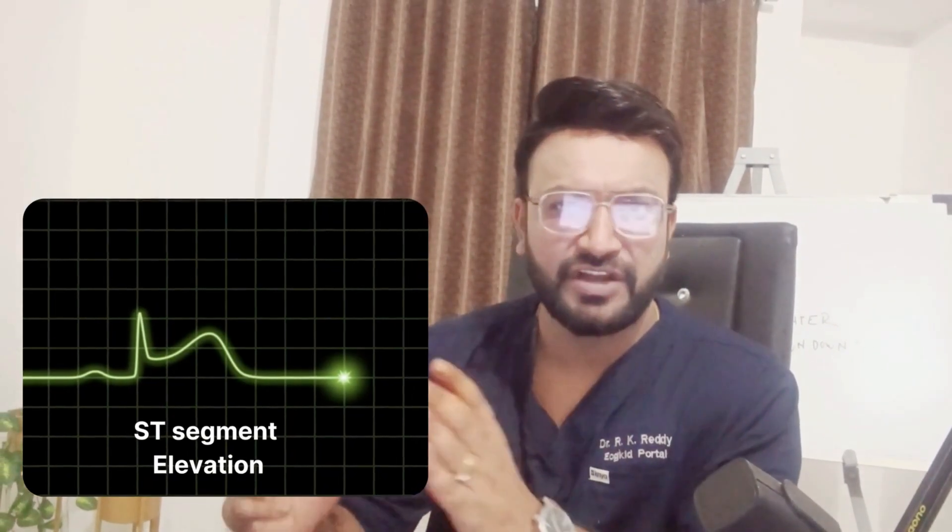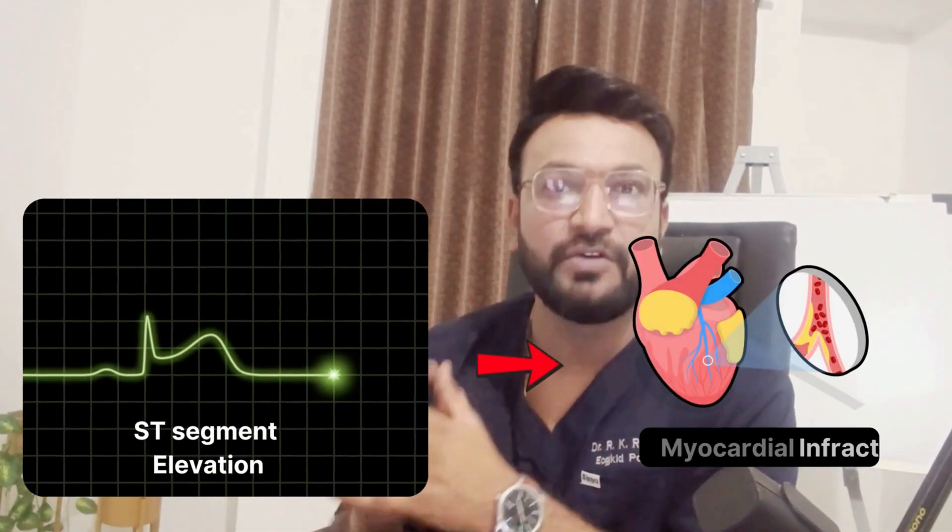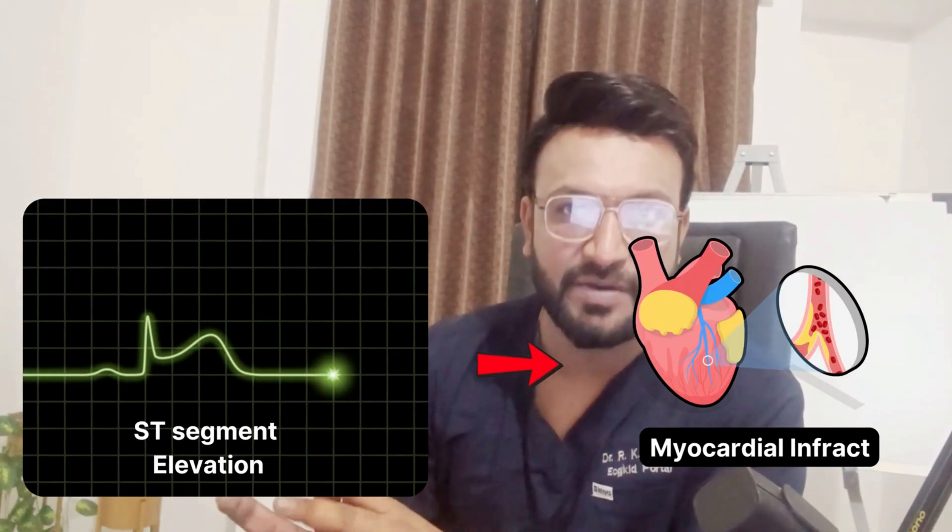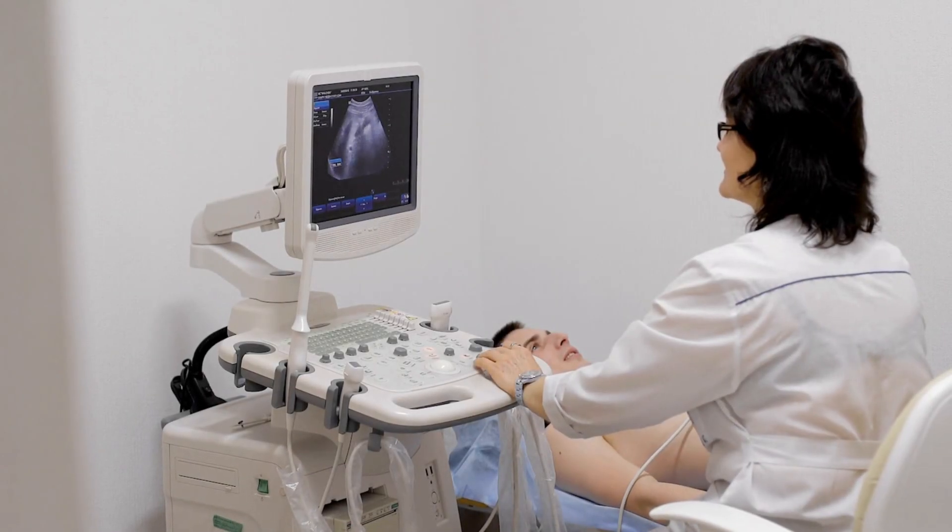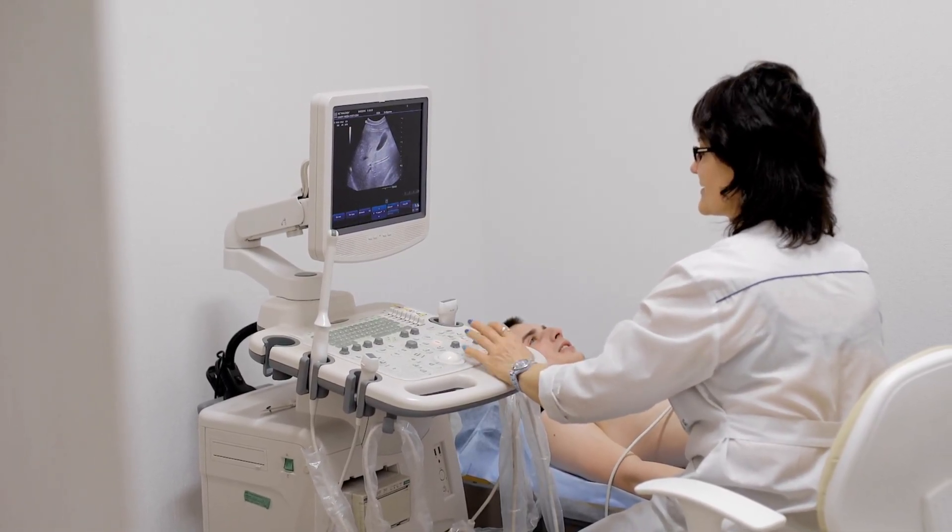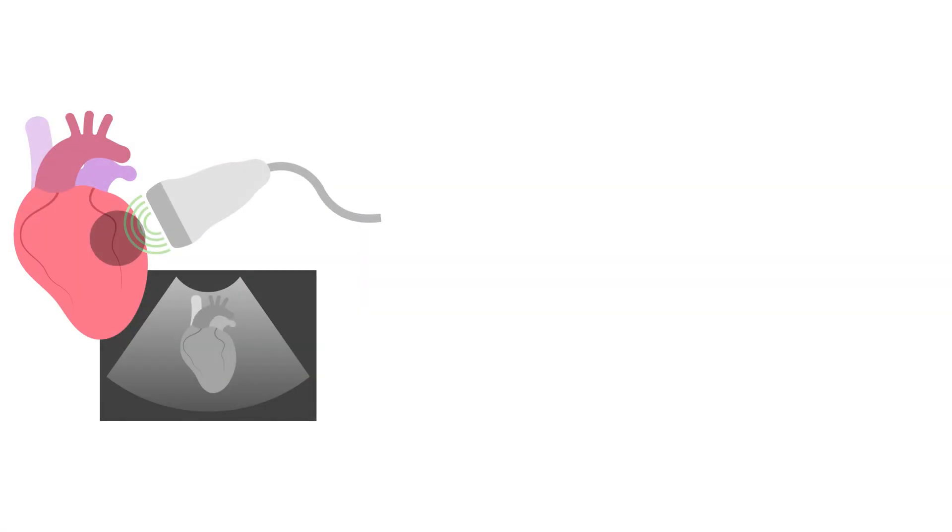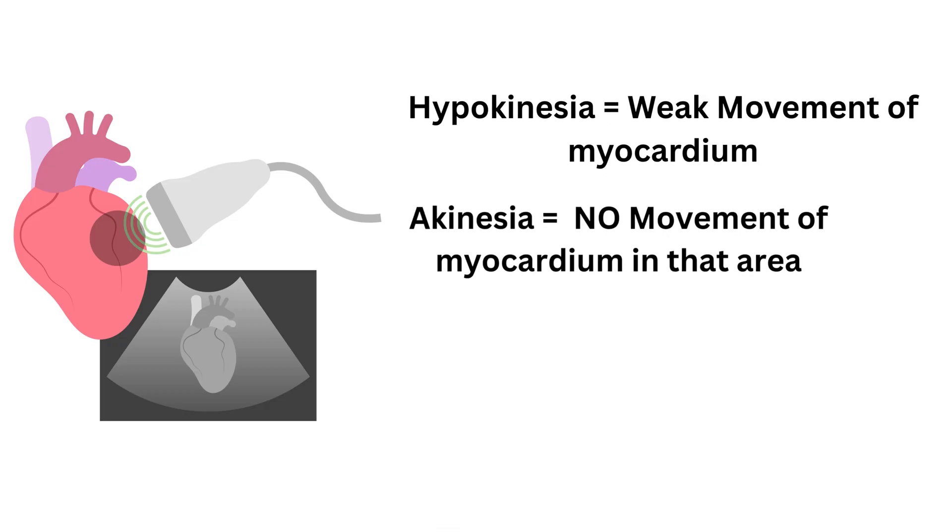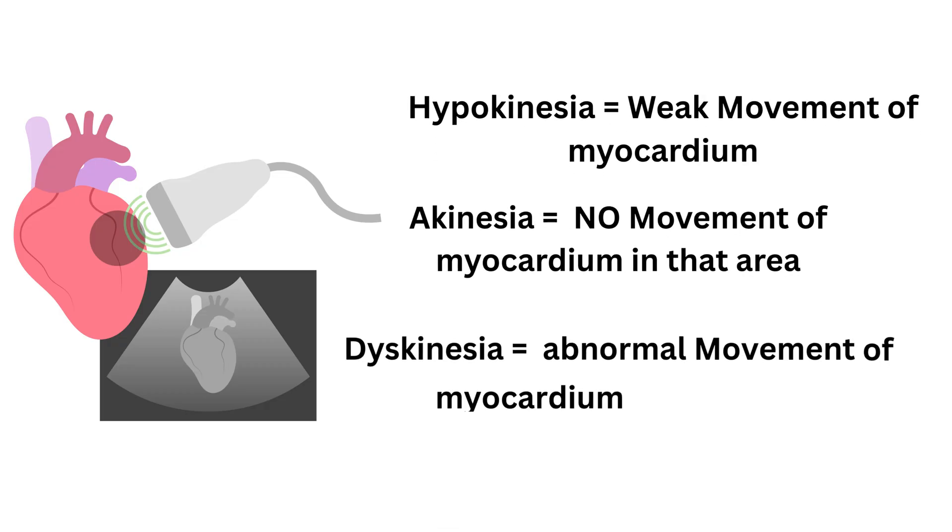When we see ST segment elevation in the ECG, we rule out it as ST segment elevation STEMI or the ST segment elevation myocardial infarction. But to rule out which wall is getting affected, we also need to bring in 2D echo. On the echo, when the artery is blocked and the part of heart that it supplies cannot contract properly, this appears as hypokinesia, meaning there is weak movement, or there will be akinesia, meaning there is no movement, or dyskinesia meaning abnormal movement of the cardiac muscles.